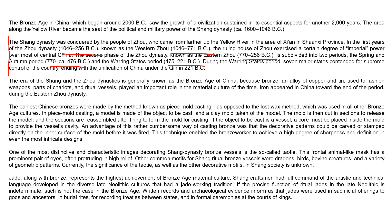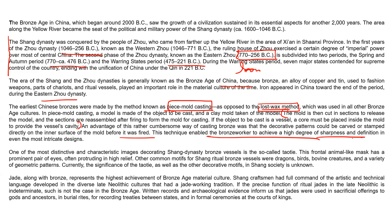The era of Shang and Zhou is generally known as the Bronze Age because bronze, used to fashion weapons, parts of chariots, and ritual vessels, played an important role in material culture. Iron appeared in China toward the end of the period, during Eastern Zhou — so Eastern Zhou means roughly 770 to 256 BC. Before that it was mostly bronze. The earliest Chinese bronzes were made by a method known as piece-mold casting, as opposed to the lost-wax method used in all other bronze age cultures. The key advantage of this process is that decorative patterns could be carved or stamped directly on the inner surface of the mold before it was fired, enabling bronze makers to achieve a high degree of sharpness and definition.